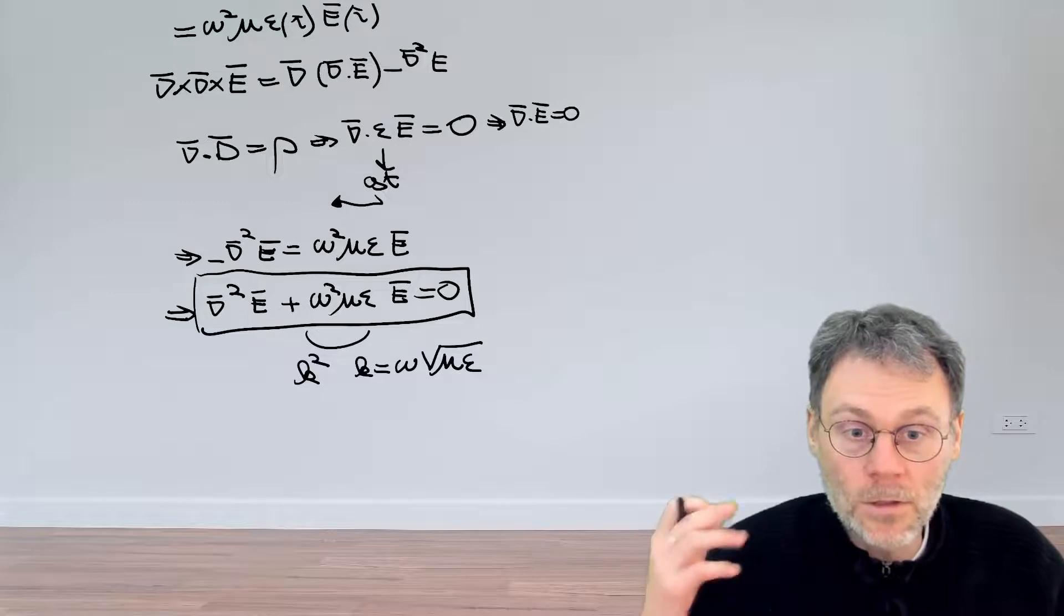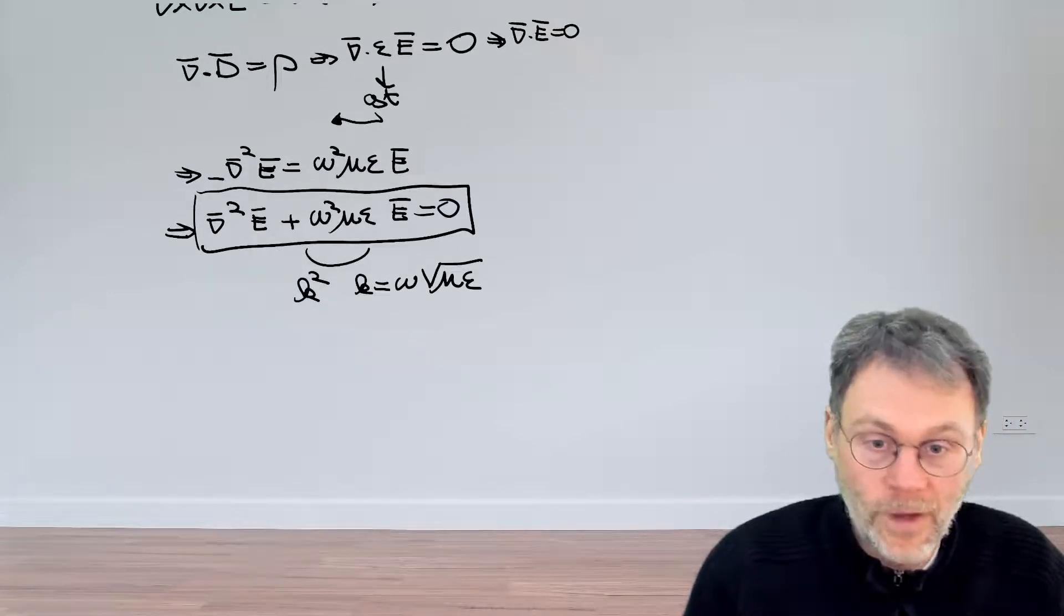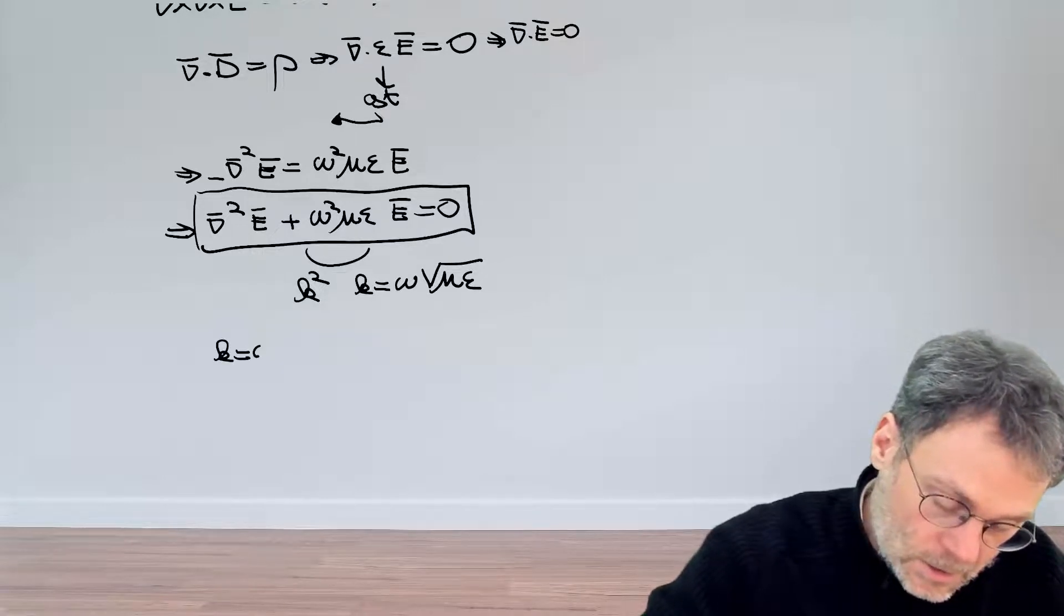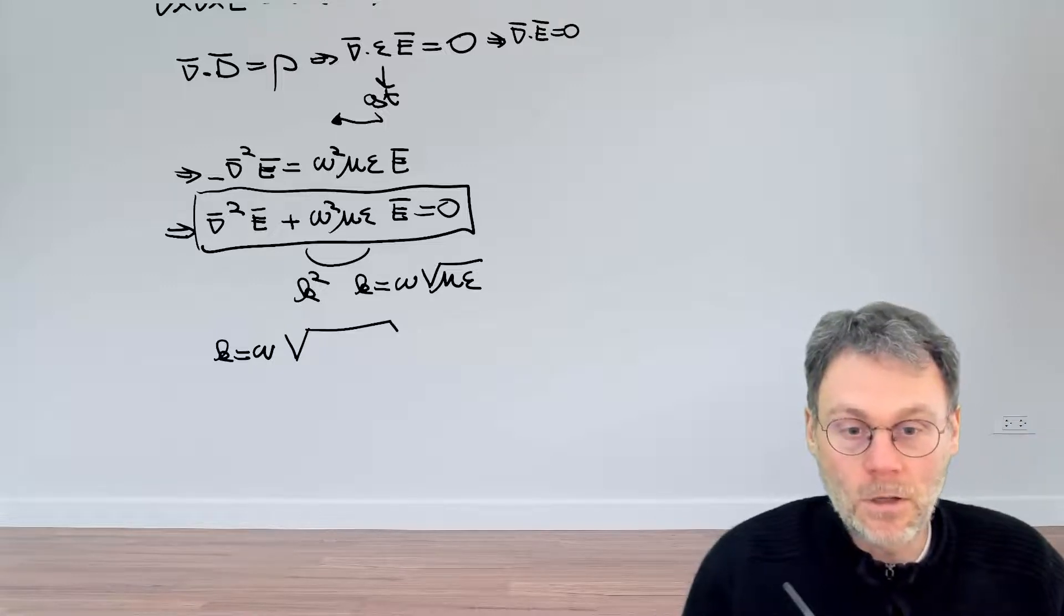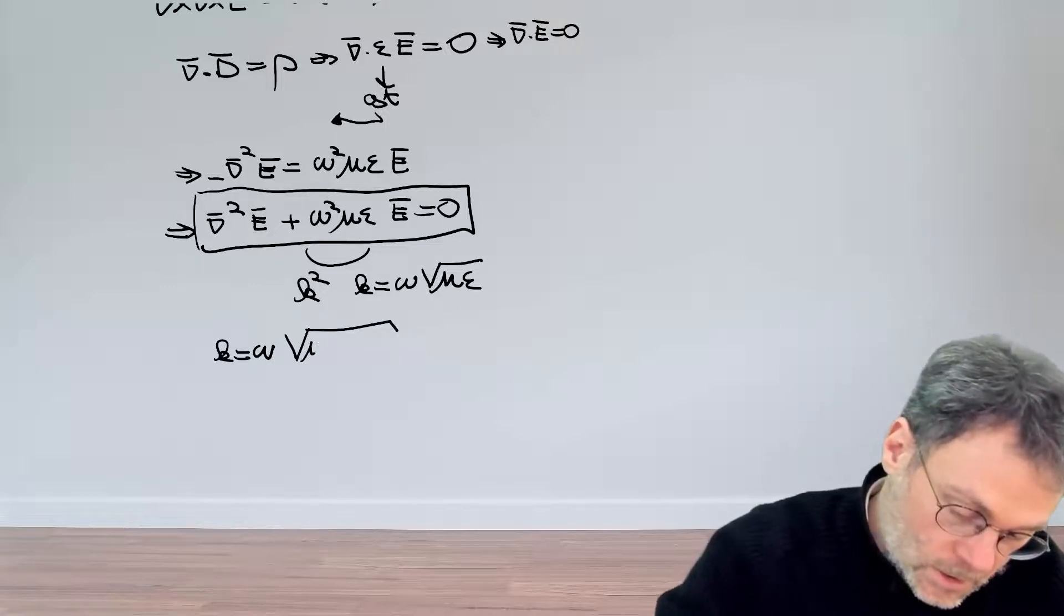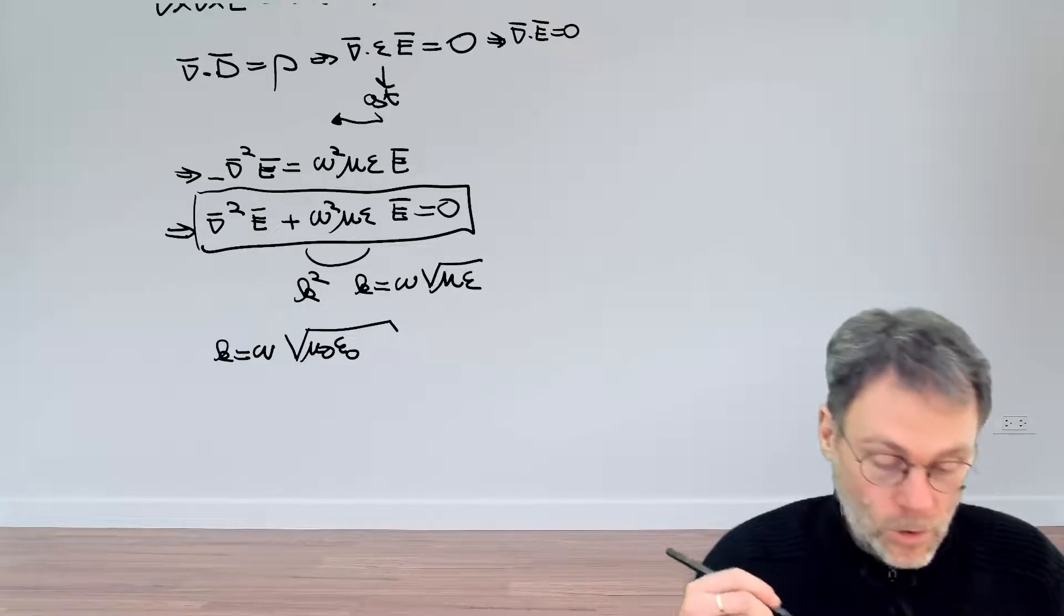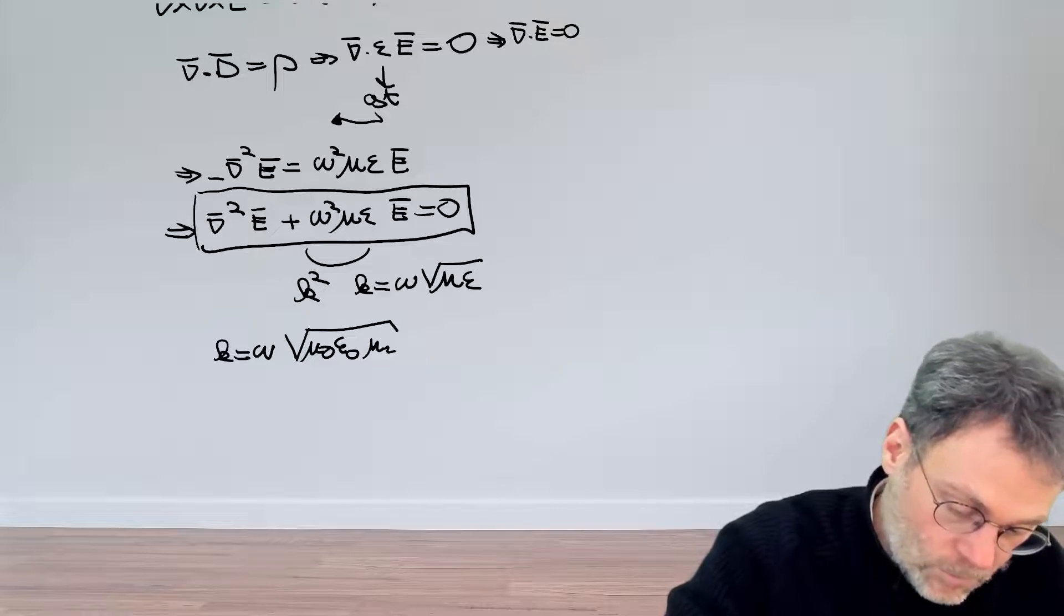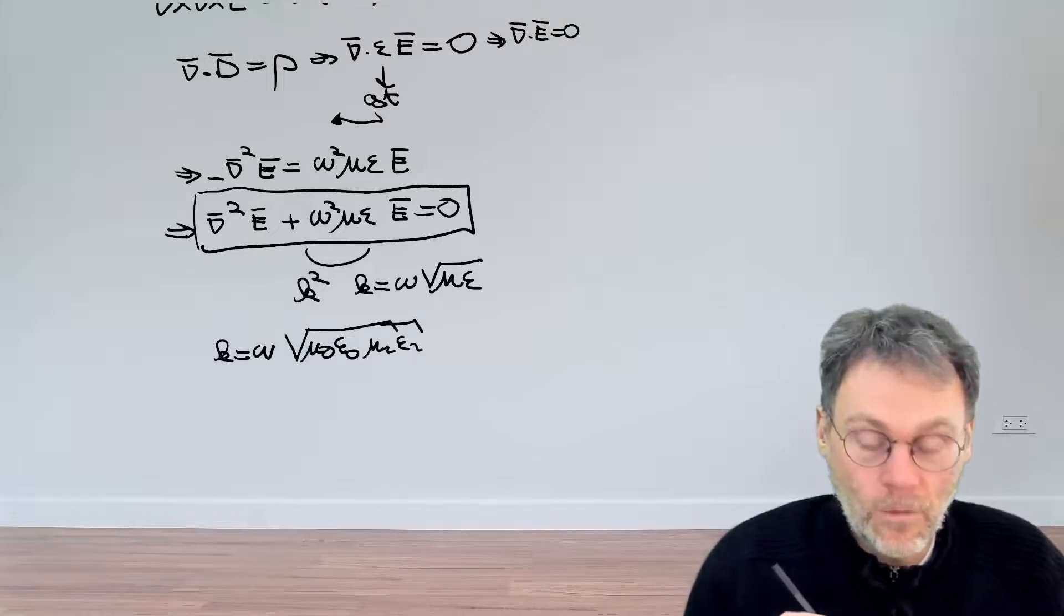If you want, you can also factor out the contribution from the vacuum. And then you can write that k is omega, and then mu epsilon, you're going to factor that as mu_0 epsilon_0, so the vacuum contribution, and then times the relative permittivity and permeability mu_r epsilon_r.